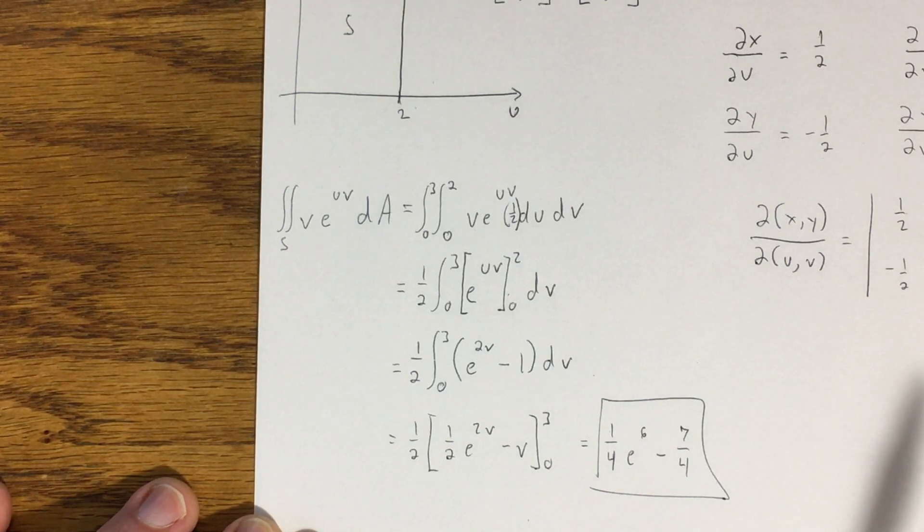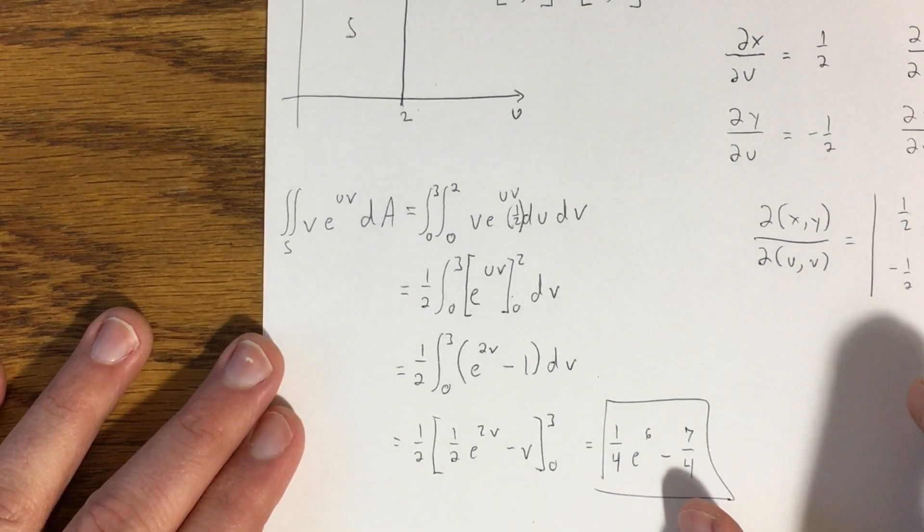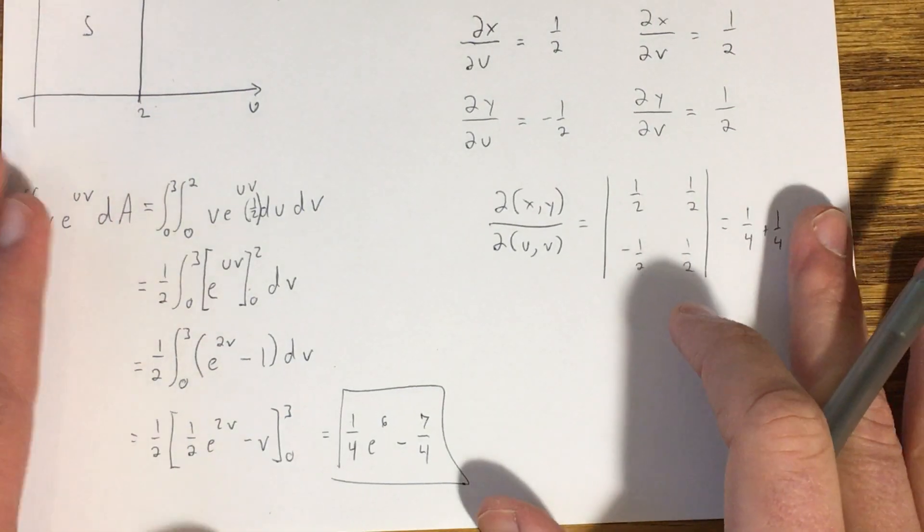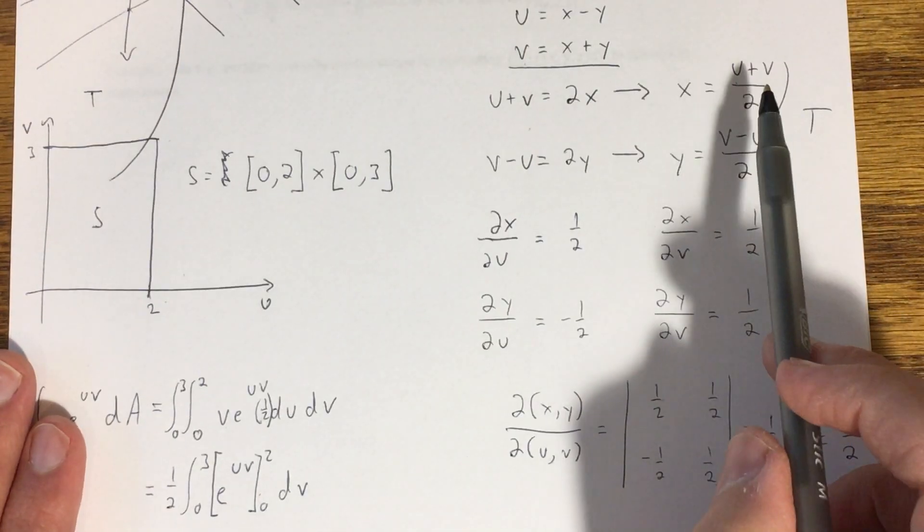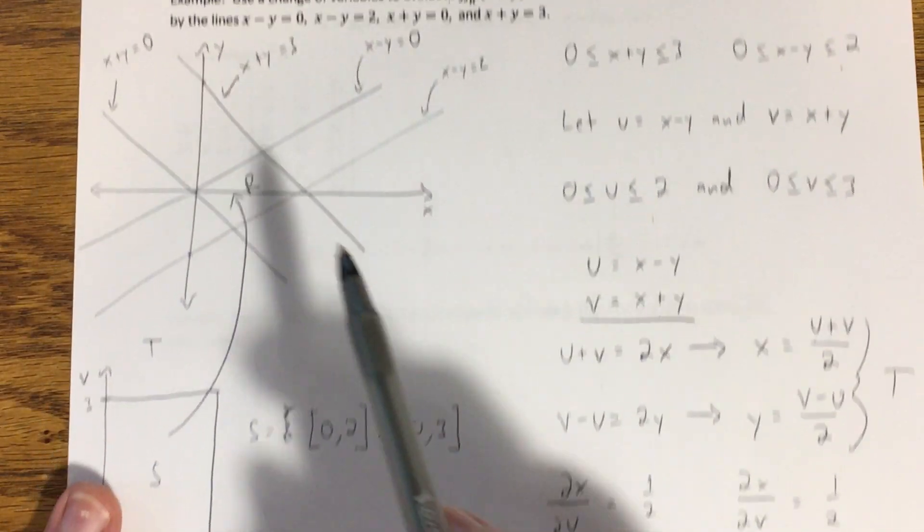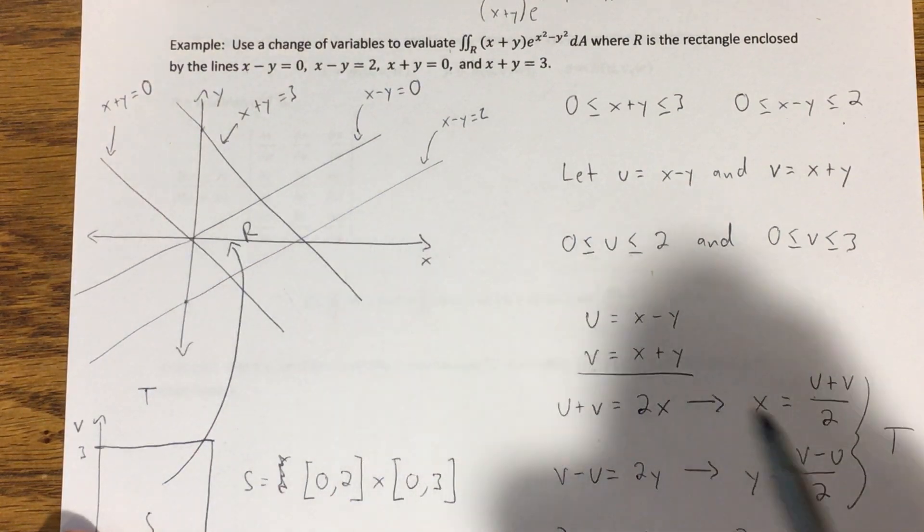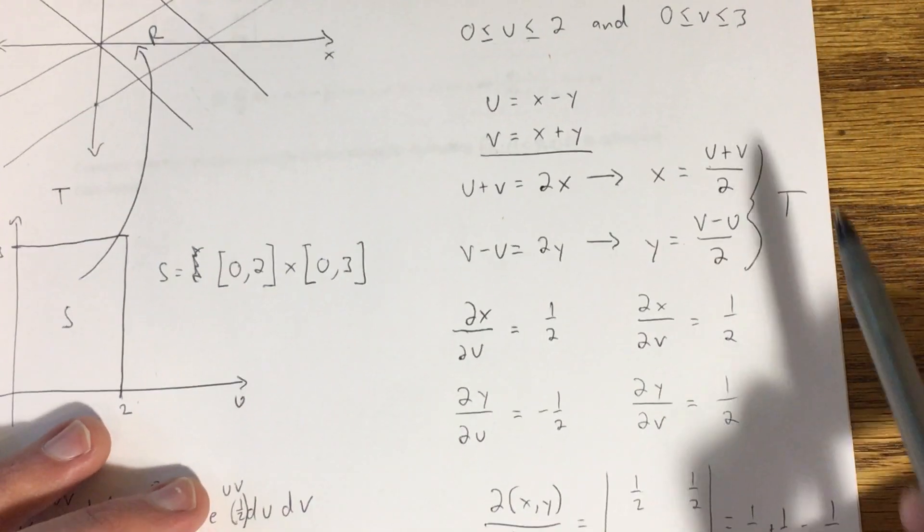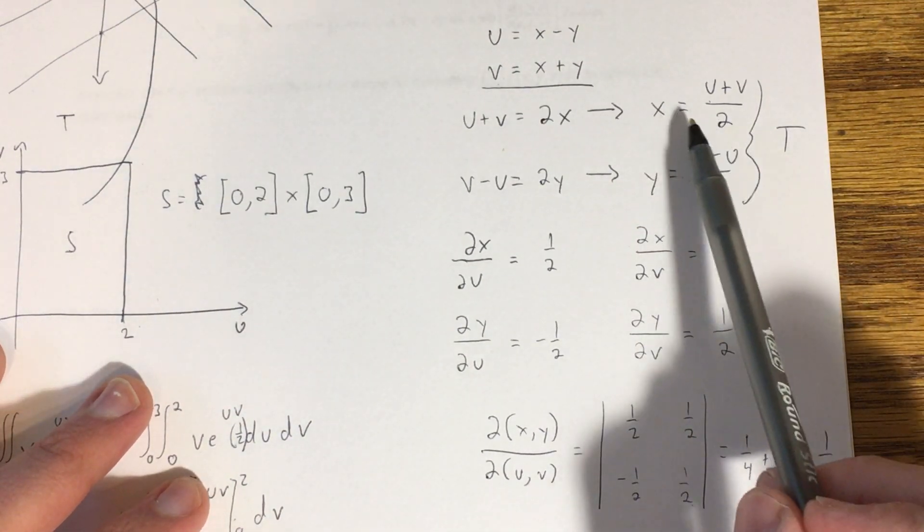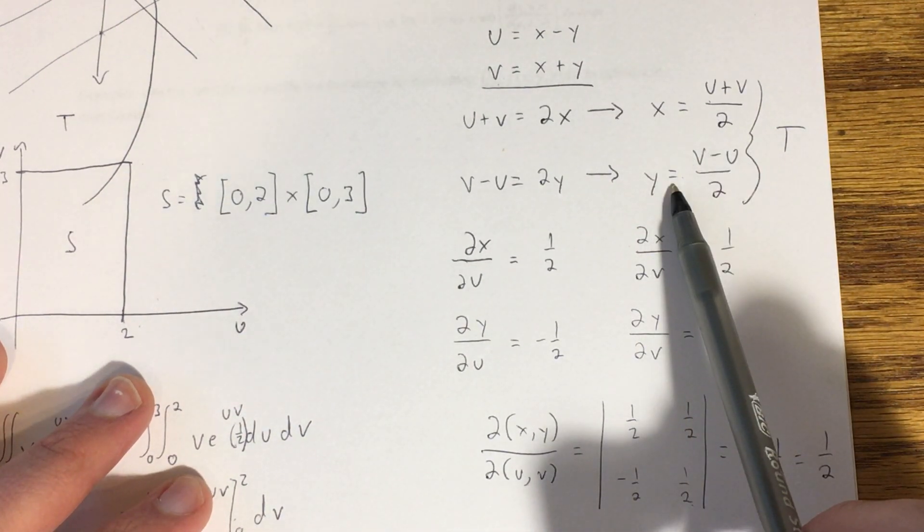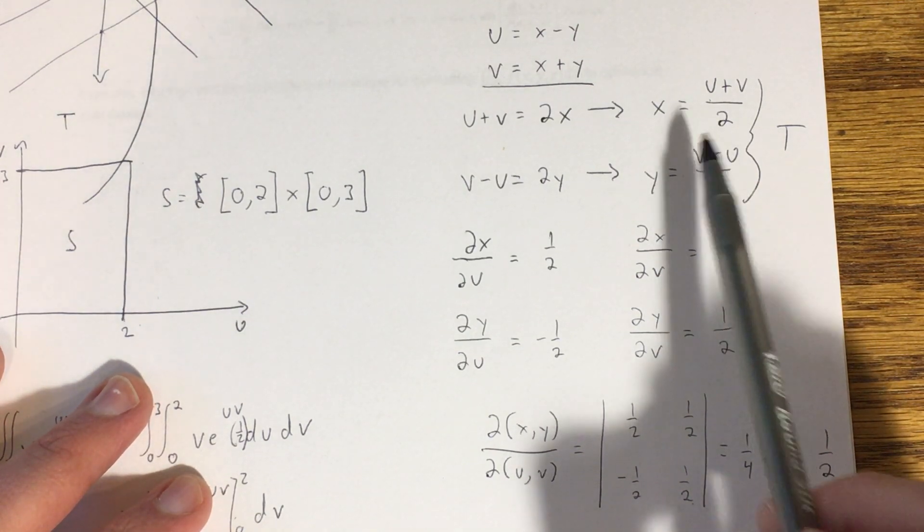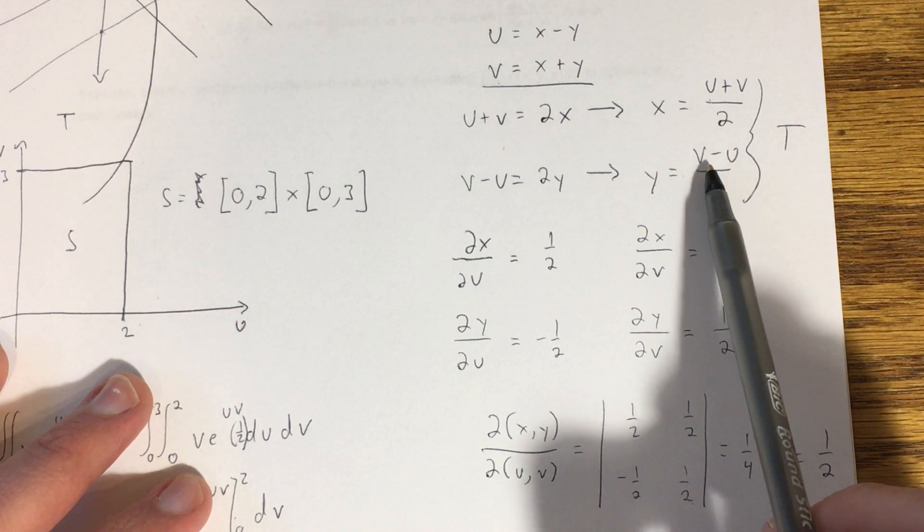So it seems like kind of a lengthy process. And these are one of the more difficult examples, I think, just because we had to come up with our transformation by graphing this region out and looking at what the lines looked like. Most of the problems, like I said before, that you're going to see in the homework will provide this for you. They're going to give you the transformation, but not all of them. Some of them will ask you to come up with the transformation yourself.